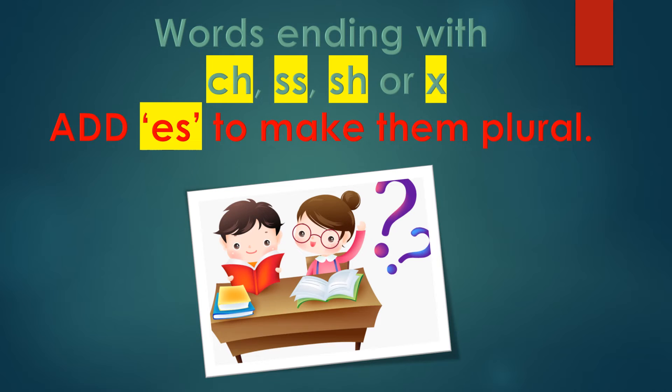Our next rule is: if a noun ends in singular form with CH, SS, SH or X, then we add ES at the end to change and make it into plural form.